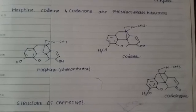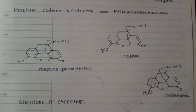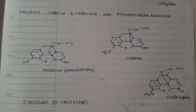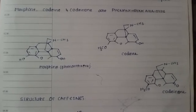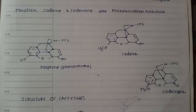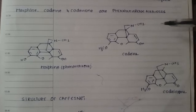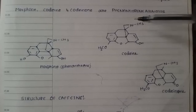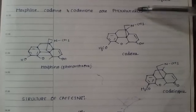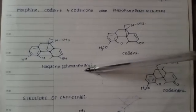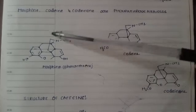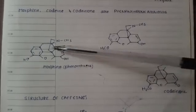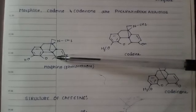Welcome back to my channel of pharmacy. Today's topic is about morphine, codeine, and codeinone. The structures of these compounds are mainly phenanthrene alkaloids. Phenanthrene means a three-membered benzene ring fused together — one, two, three — fused like this, which is called phenanthrene.